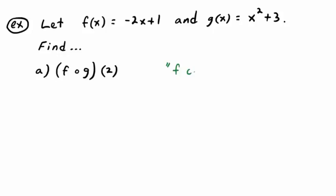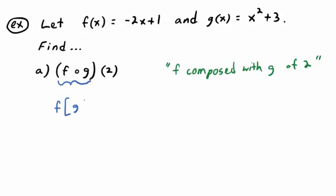You've got to get used to the language: f composed with g. The assumption is that's going to be a function all by itself, and then the parentheses 2 is just function notation evaluated at 2. Right away, replace the composite circle notation with what it really means — f of g of 2. So f composed with g of 2 means, by definition, f of g of 2. Every time you see the fog notation, just replace it with f of g.